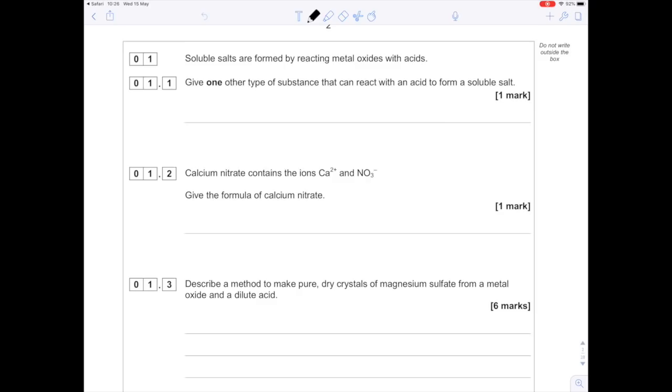Question 1: soluble salts are formed by reacting metal oxides with acids. Give one other type of substance that can react with an acid to form a soluble salt. You've got lots of options here - make sure you don't mention metal oxide. You could state metal hydroxide, metal carbonate, or even an alkali.